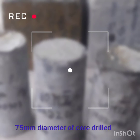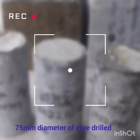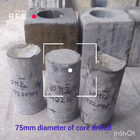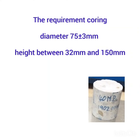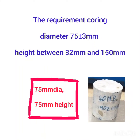First, make a 75 mm diameter core drilled from the cube specimens. The required test specimen diameter is 75 plus or minus 3 mm, and height between 32 mm and 150 mm. That's why a 75 mm diameter and 75 mm height shall be used for the tests.